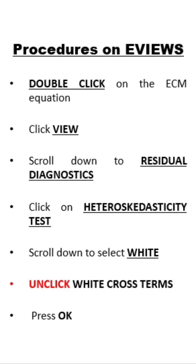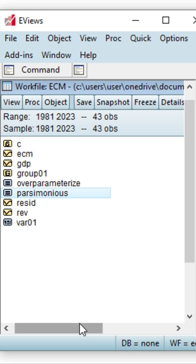What are the procedures on eViews? First, we double click on the ECM equation and then we click View. Then we scroll down to Residual Diagnostics and click on Heteroscedasticity Test. Then we scroll down to select White, unclick White cross terms, and press OK. So let's see how this is done in eViews.